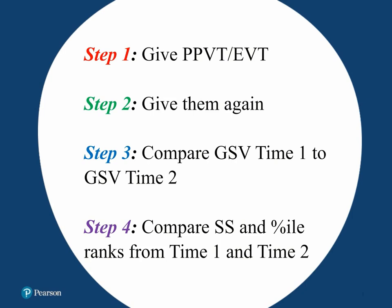To go a step further, here I have listed four steps to guide how to interpret progress. Step one is to simply give a test and then compute the scores. Step two is to give the same test or tests again at a later date when you need to determine if progress is being made. GSV scores become meaningful the second time you give a test because it's at this time you can compare performance. Step three is to compare GSV from time one to time two on the same test. And step four is to compare standard score and percentile ranks from time one and time two. On the following slides, I'm going to give concrete examples of these steps.